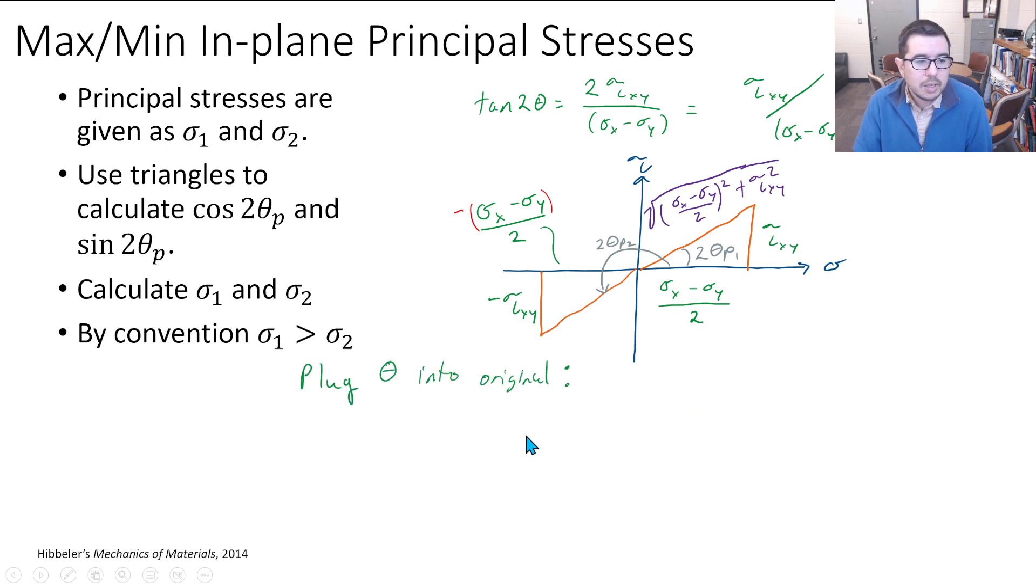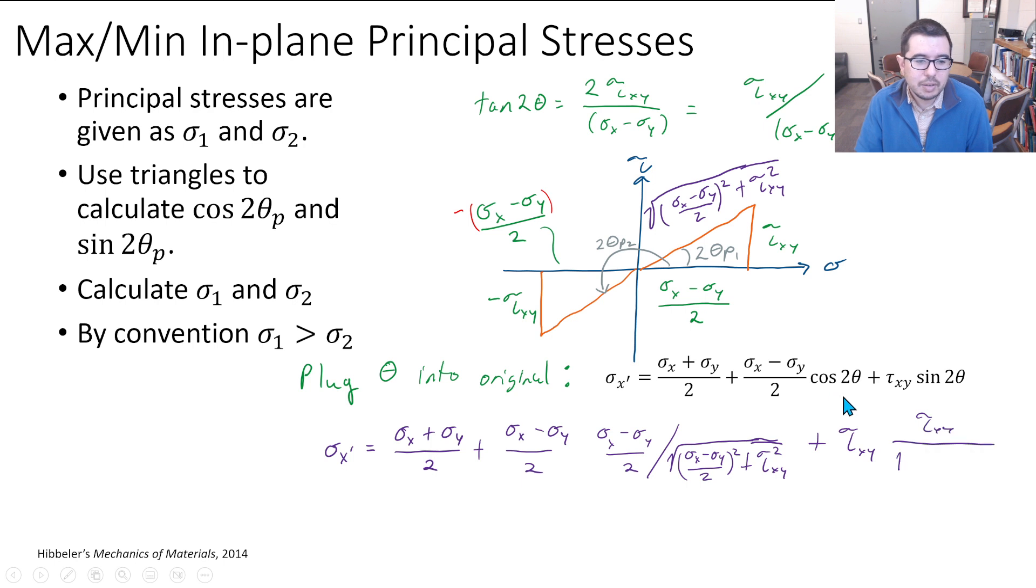So we can plug theta into the original stress transformation equation. It gets to be kind of big, a little bit messy, as we see here. But we don't have to do anything super complex. We can figure out what's the cosine of this - it's just the adjacent over the hypotenuse, which is what you see here. And what's this one? This is just the opposite over the hypotenuse. I called it block because I didn't want to write it out again.